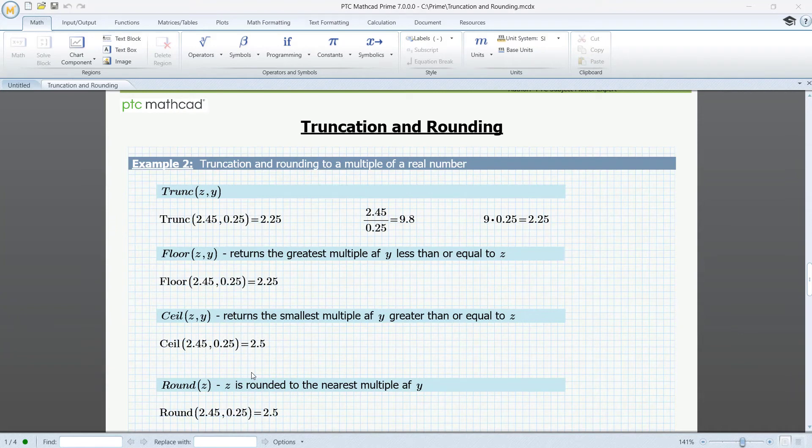In the next example, we shall see how we can truncate and round to a multiple of a real number. To truncate 2.45 to a multiple of 0.25, divide 2.45 by 0.25 to get 9.8. Truncate the result and the truncation of 2.45 to a multiple of 0.25 will then be 9 times 0.25.